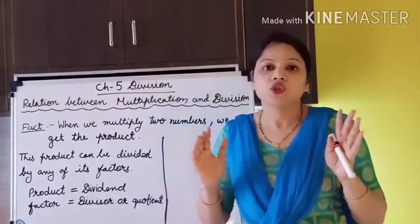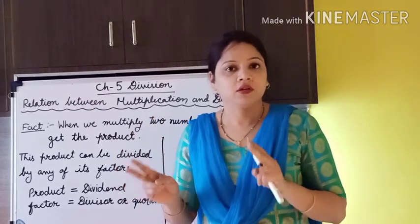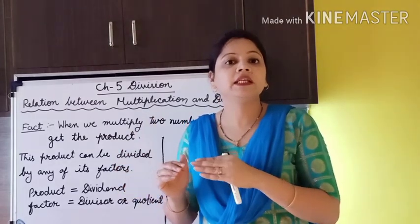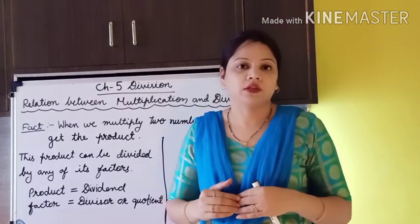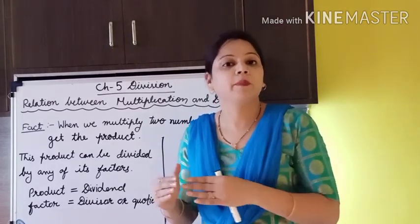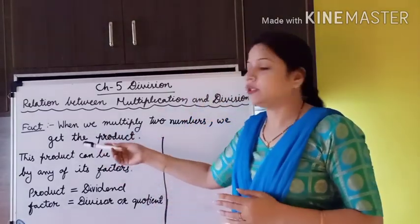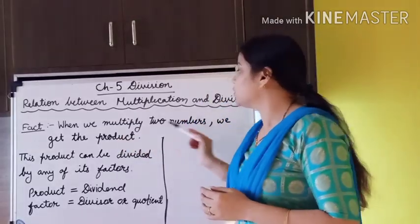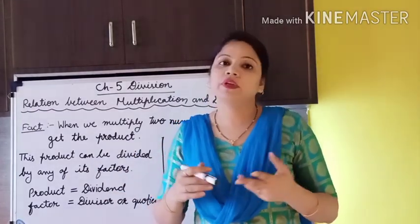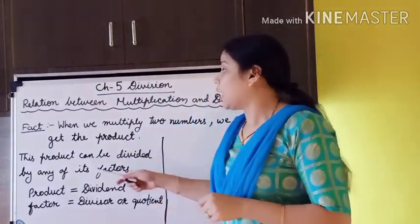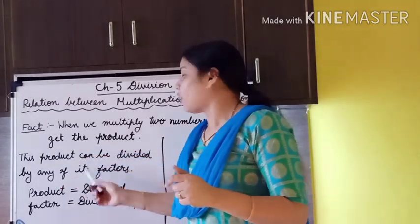To multiply we need 2 factors. After multiplying those factors we get the product — the result is called product in multiplication. Now this product can be divided by any of its factors.